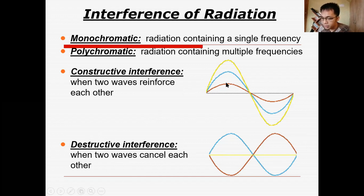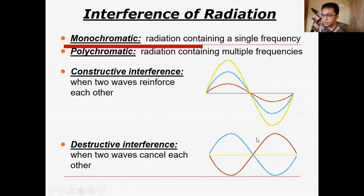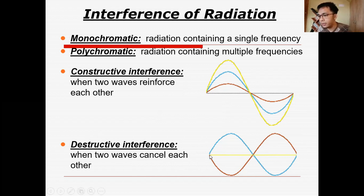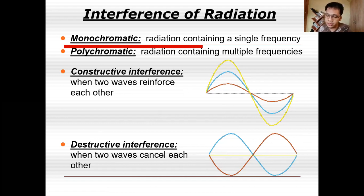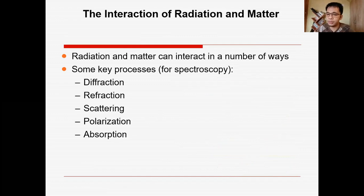When two waves combine constructively, they generate a higher amplitude wave. But when two opposing waves meet — destructive interference — they tend to cancel each other out, regenerating a straight line. So there will be no electromagnetic radiation due to the destructive interference between the two waves.